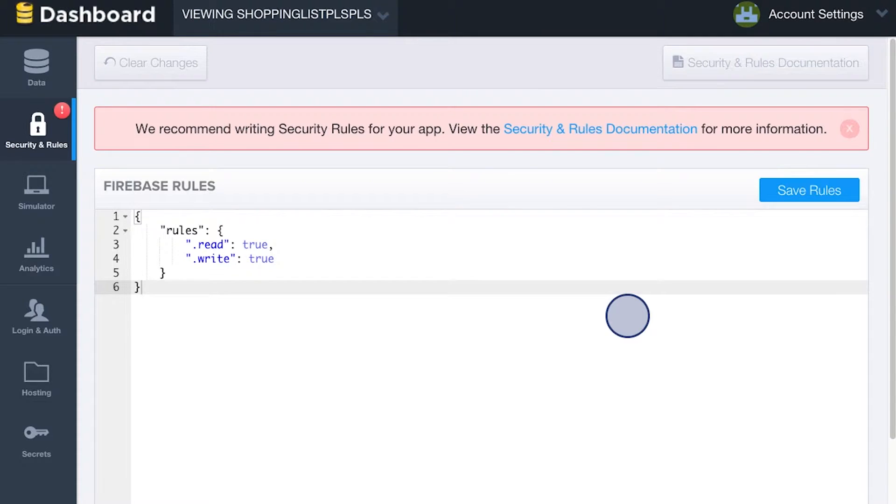You already saw an example of what rules look like when we looked at the dashboard before. In fact, clicking here is where you'll need to go to edit your rules. Once you're in the Security and Rules tab, you can write your rules here and save them using this button.